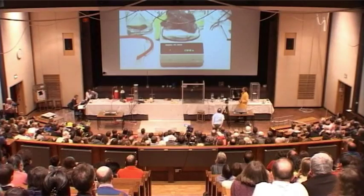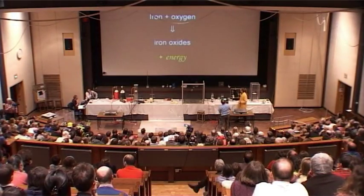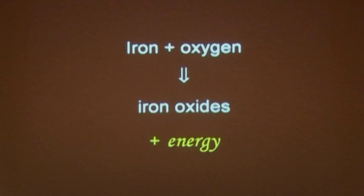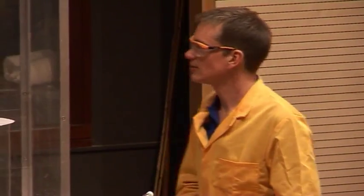Okay, so we can show this using a chemical equation. If we have the slides on, please. The iron is combining with the oxygen from the air forming various iron oxides here and releasing energy in the form of light and heat.